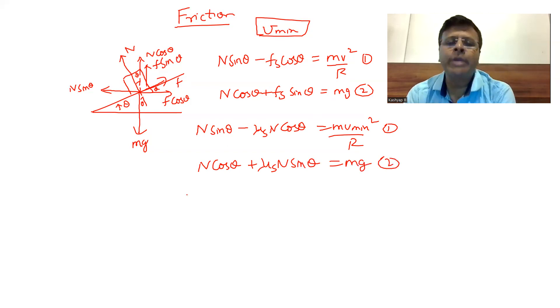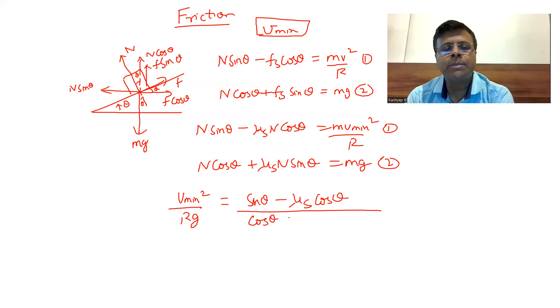If I want to get some more dimensions, I'll divide these two equations, which will give me V minimum squared divided by Rg, because M and N will cancel to get sine theta minus mu S cos theta divided by cos theta plus mu S sine theta.